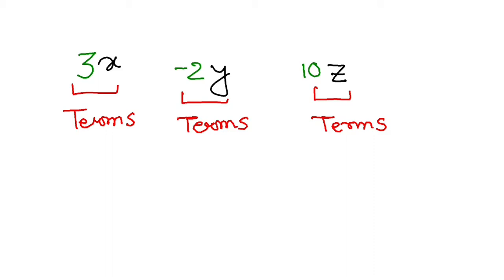Now all these terms, if I join them by operators like plus, minus, divided or product - let's say I am putting a plus here and minus here - this becomes an algebraic expression.